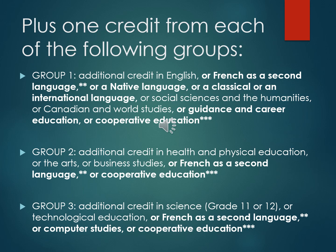In addition to the compulsory courses, you must also complete one credit from each of the following groups. A Group 1 credit is an additional credit in English, French as a second language, native language, classical or international language, social science and the humanities, Canadian and world studies, guidance and career education, or cooperative education. A Group 2 credit is an additional credit in health and phys ed, the arts, business studies, French as a second language, or cooperative education. A Group 3 credit is an additional credit in science at the grade 11 or 12 level, technological education, French as a second language, computer studies, or cooperative education.